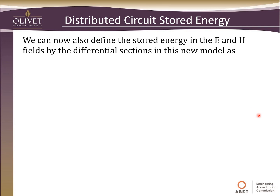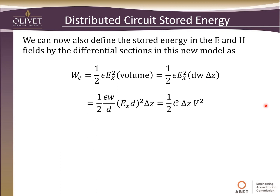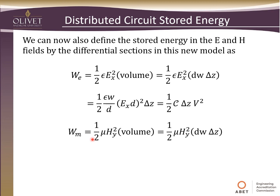With this new model, we also need to consider the stored energy in the electric and magnetic fields of these differential sections. In this model, our original stored energy equation is multiplied by the volume, which is now D×W times delta-z — that gives us the stored energy in that cell. Substituting the quantities from those cells, we see it's going to be one-half times the per-unit-length capacitance times the differential length times the voltage squared. Likewise, for the magnetic field, it's going to be one-half times the inductance per unit length times the differential length times the current squared.